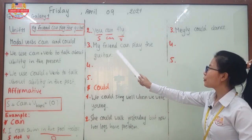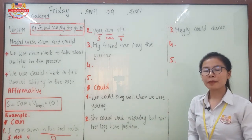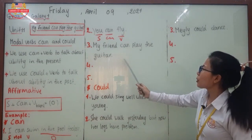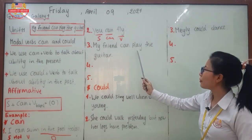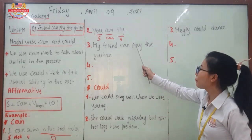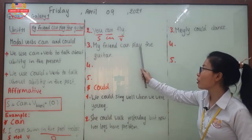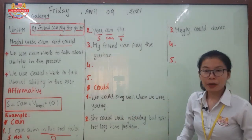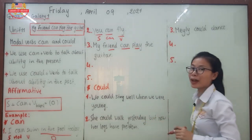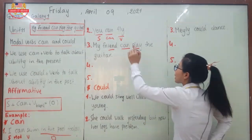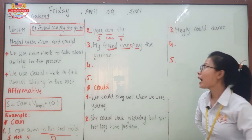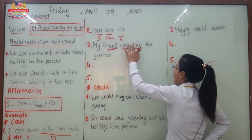Number three: 'My friend can play the guitar.' Notice that 'play' does not have an -s, even though 'friend' is a third-person singular subject. This is because when we use a modal verb like 'can,' the verb that follows must be verb base — it doesn't change. Also, we don't add -s to the modal verb 'can' itself.